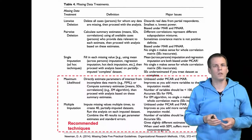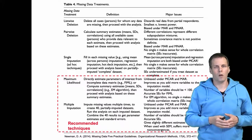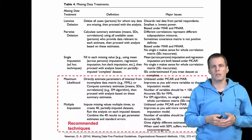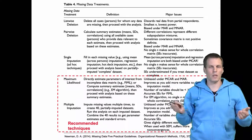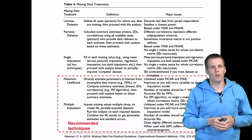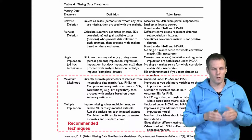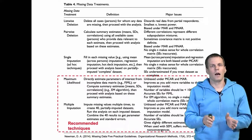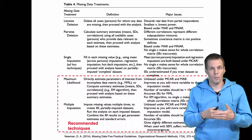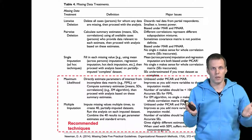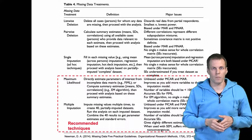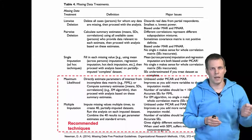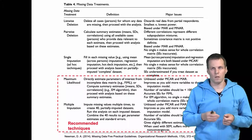We have list-wise deletion, dropping all cases that have any missing data. Pair-wise deletion basically uses whatever data you have for each specific analysis, allowing the sample to be different for each analysis. For example, in a correlation matrix, one correlation may be calculated with different data than another correlation.